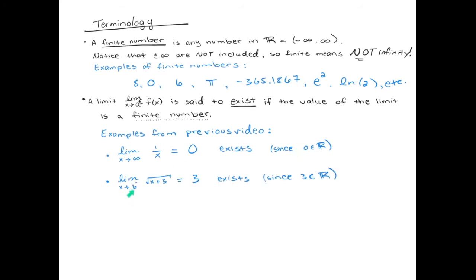Moving on to another one from the previous video, we had the limit as x approaches 6 from the left of the square root of x plus 3. The value of that limit is 3. Again, go see the previous video. 3 is a finite number. So yes, this limit exists.